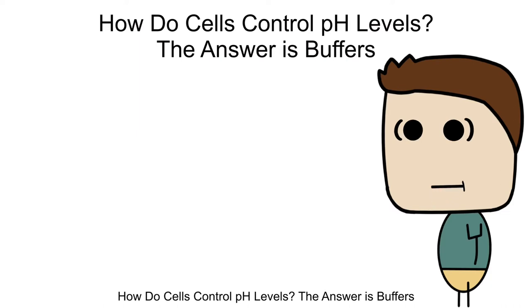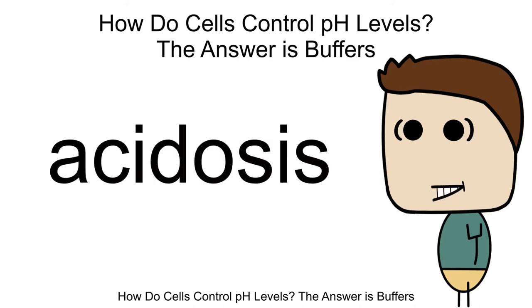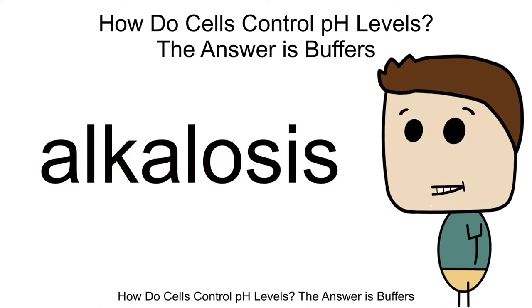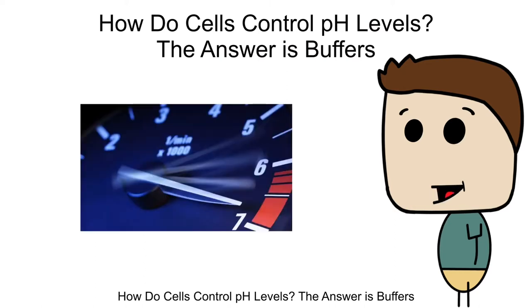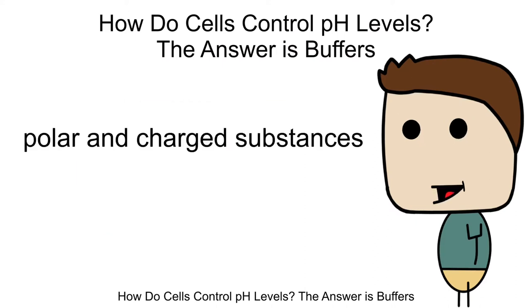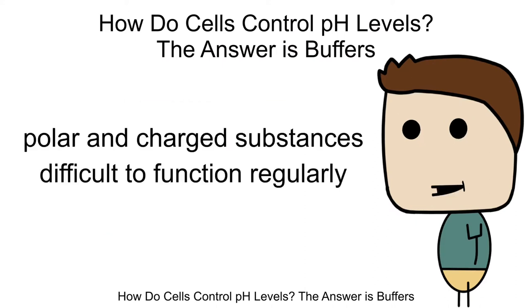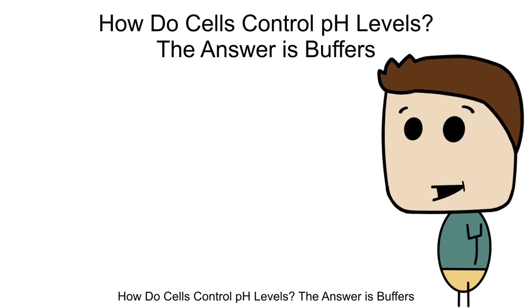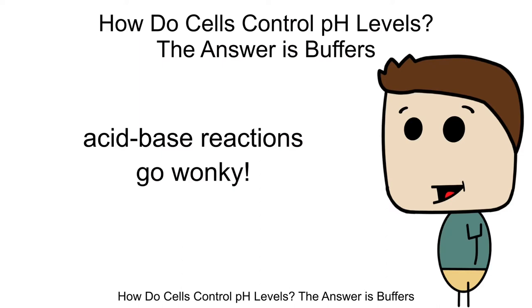In fact, it's so dangerous that medicine has its own name for people who have high acid levels in their systems, and it's called acidosis. And for those who have dangerously low levels of acid, alkalosis. You can just imagine what happens when such extremes of pH levels exist in a living organism. Polar and charged substances in our bodies will find it difficult to function regularly, even the usual acid-base reactions themselves start to go wonky when there's an abundance on one side of the pH spectrum.